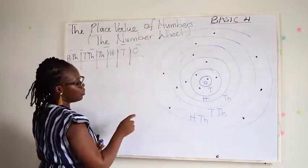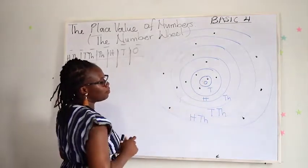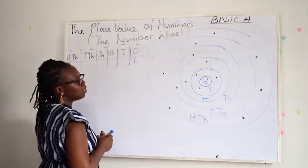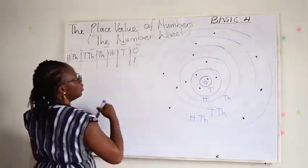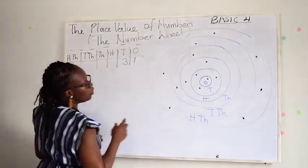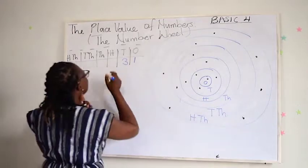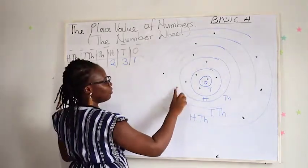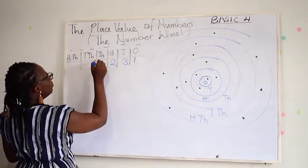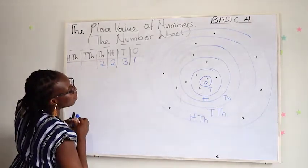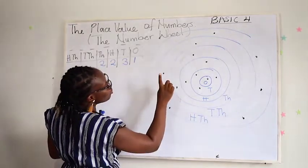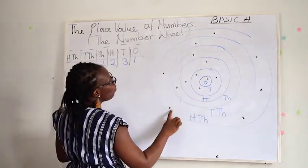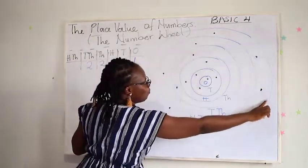So let's do that on the place value chart. How many pebbles do I have in ones? One. How about the tens? I have one, two, three — so three. How many in hundreds? One and two — so two. For thousands, I'm counting two. For ten thousands, also two — one and two. And for hundred thousands, I have two, three, four, five.